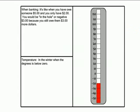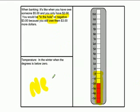Now let's think of when you think of negative numbers. When we bank, it's like when you owe someone five dollars and you only have two dollars. You would be in the hole, or negative three dollars, because you still owe them three dollars. Another example of negative numbers is when temperatures are below zero. Here's our zero mark, and all these temperatures below here are negative numbers.